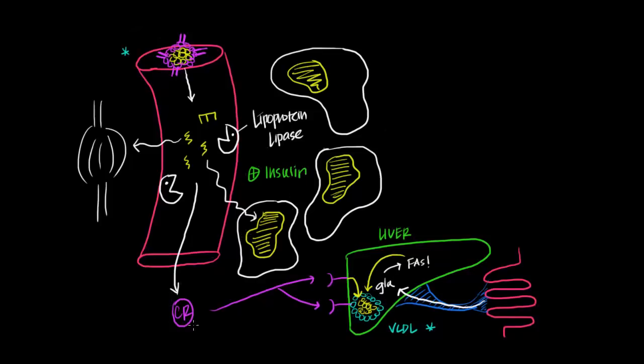We've successfully followed the journey of our chylomicron remnant from our small intestine to the liver, and simultaneously how fat is transported and stored inside of our adipose cells, which I will now actually label so that we don't forget what these are. But there's one more question that we need to answer before we finish, which is what happens to the fat that's stored in these adipose cells?